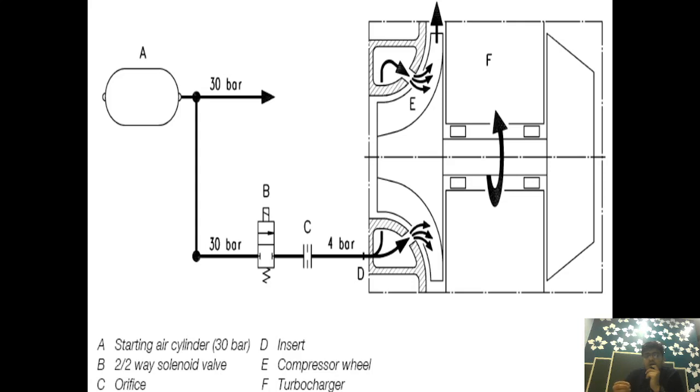While providing air through the nozzle effect, it's also accelerating the speed of the turbocharger. It helps the turbocharger reach rated RPM so it becomes self-sufficient for building up the required compressed air. That is the function of jet assist turbocharging system.